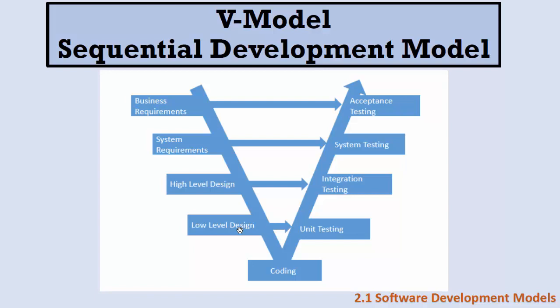But when do we execute these test cases? We execute them after coding. So what is the difference between waterfall and V model? In waterfall, we write test cases and execute them after development. But in the V model, we write test cases before development, before coding, but we execute them after development.